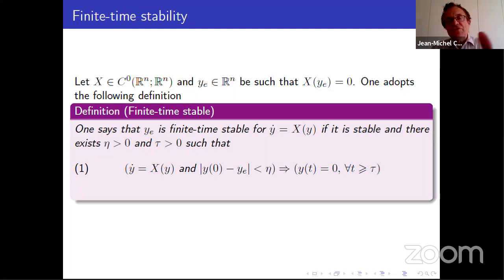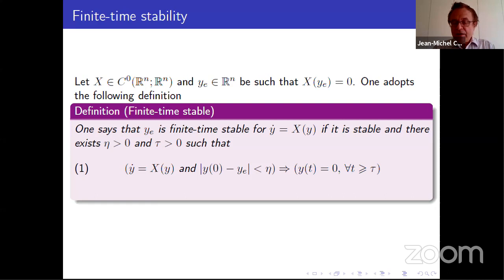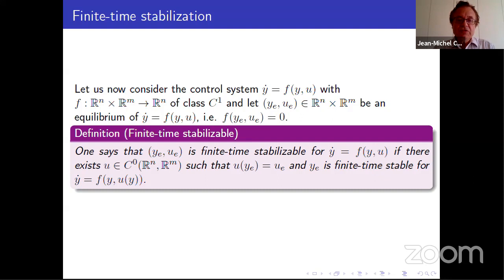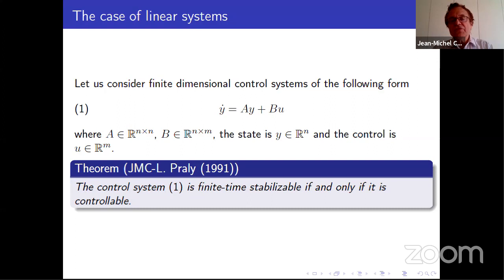This raises the interesting question: when you have a controllable control system, can you stabilize it in finite time? The definition of finite time stability requires stability first, and instead of asymptotic convergence you require convergence in finite time — if you have a solution of the closed loop system, then y(t) equals 0 if t is greater than or equal to tau. For a linear controllable system in finite dimension, you can always stabilize it in finite time, even in small time. Let's start with the simple example y1-dot equals y2, y2-dot equals u — a linear system with state dimension two and control dimension one.